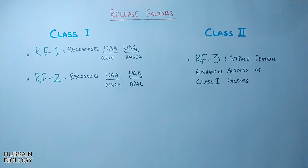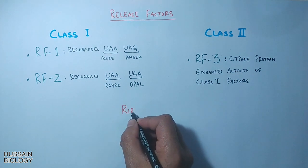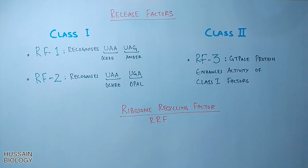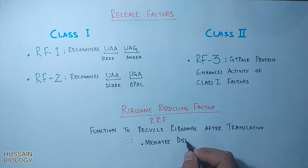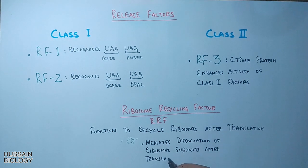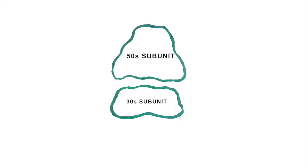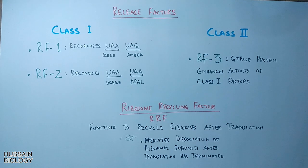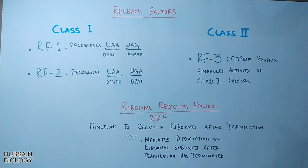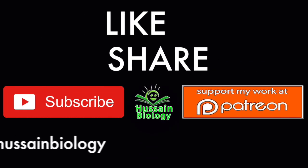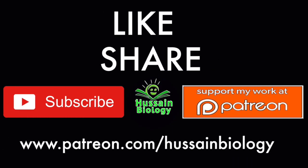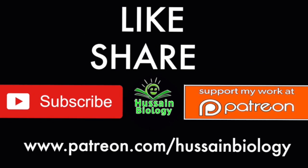After translation has been terminated, we need some factors to dissociate the two subunits of the ribosome. For that we need the ribosomal recycling factor (RRF) and also elongation factor G (EF-G). Both these proteins mediate the dissociation of ribosomal subunits after translation termination. These are the factors, enzymes, and components of prokaryotic translation.